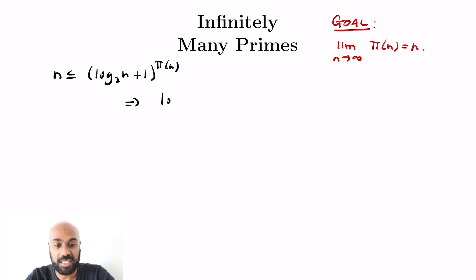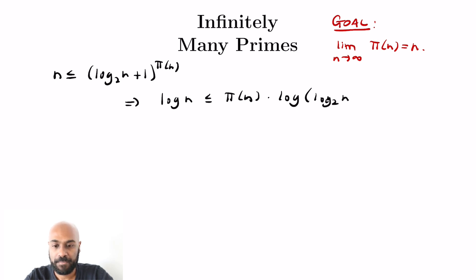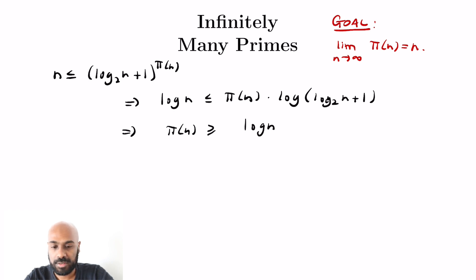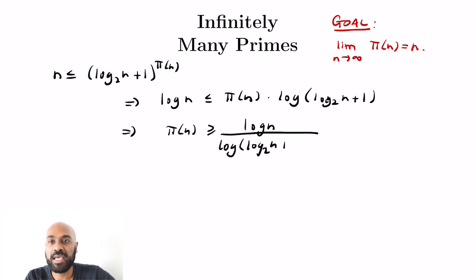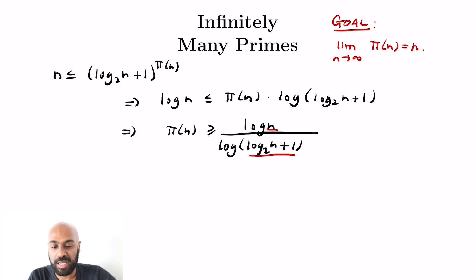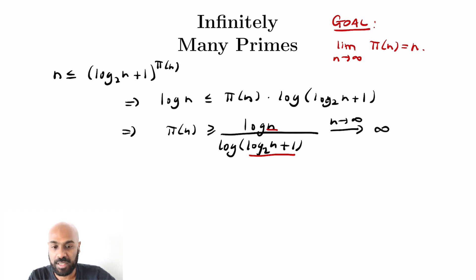Taking the logarithm of both sides lets us extract an inequality for π(N). We get log(N) ≤ π(N) · log(log₂(N) + 1), so π(N) is at least log(N) divided by log(log₂(N) + 1). This is a crude lower bound, but N is very large compared to log₂(N) + 1, so this expression goes to infinity as N goes to infinity. Therefore π(N) blows up, and the number of primes is infinite.